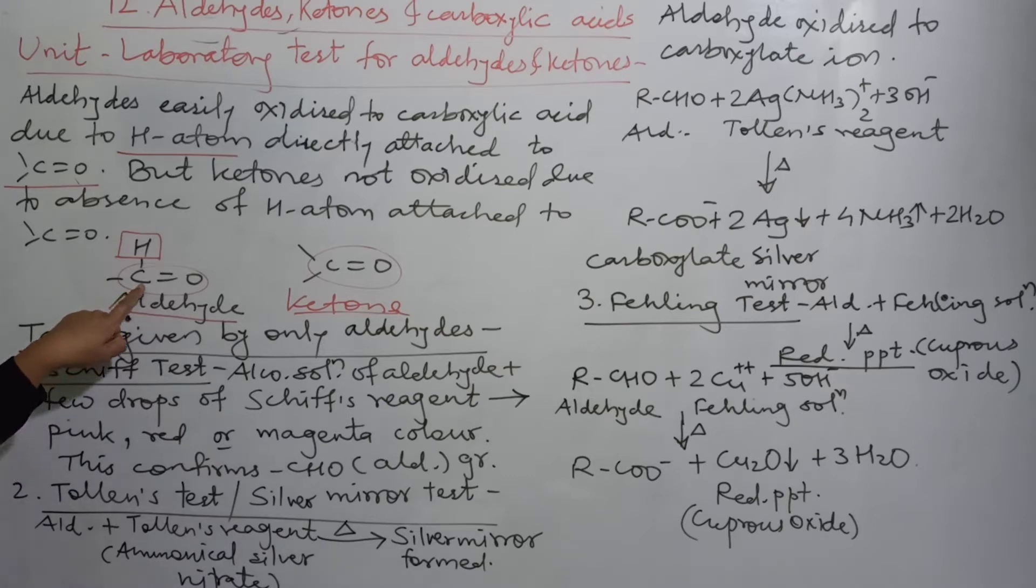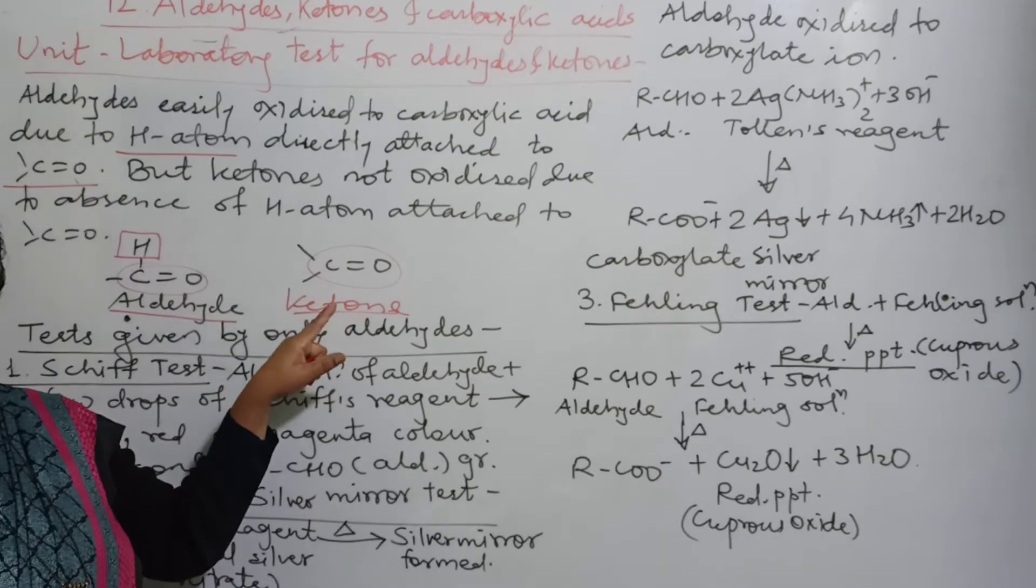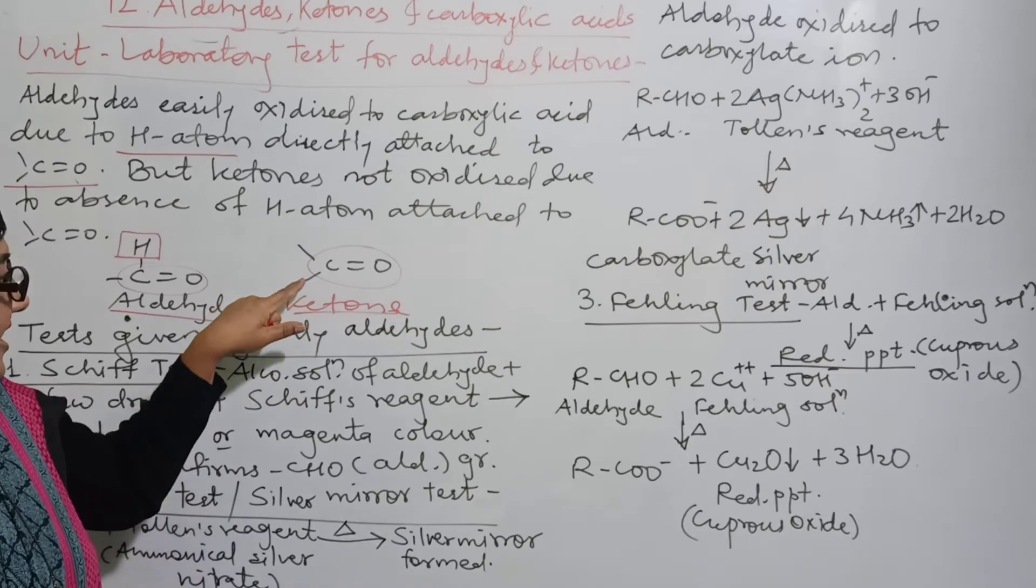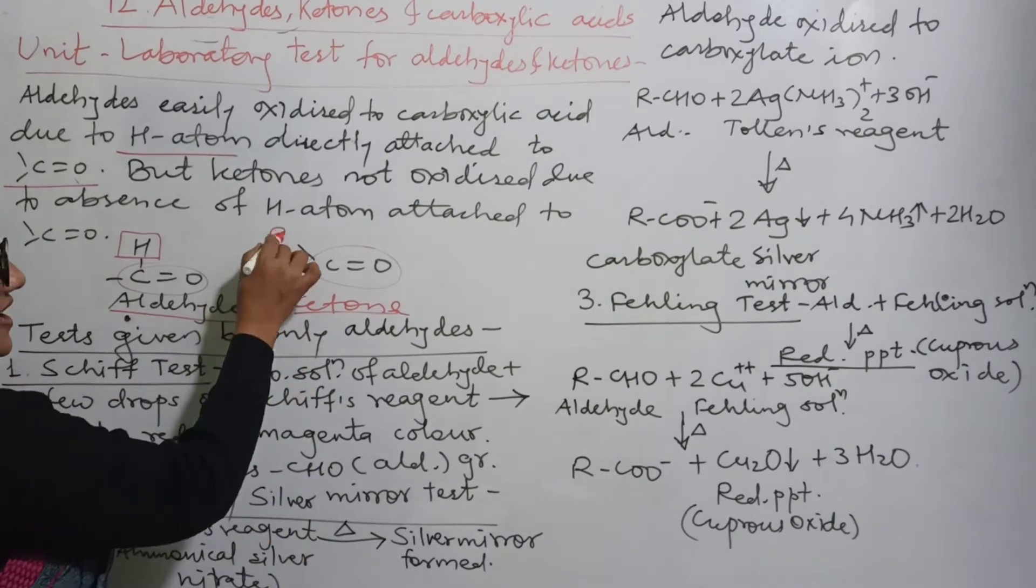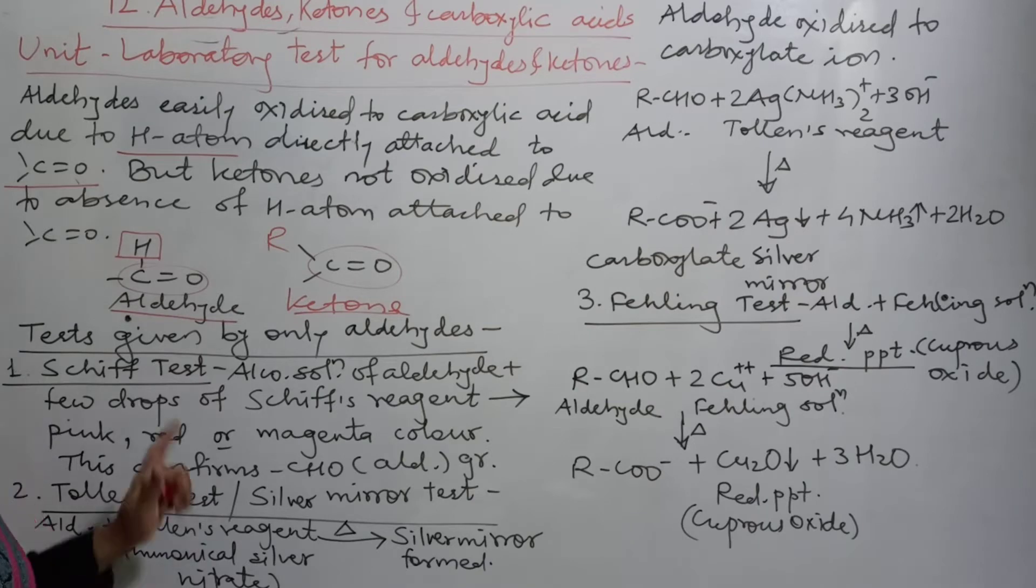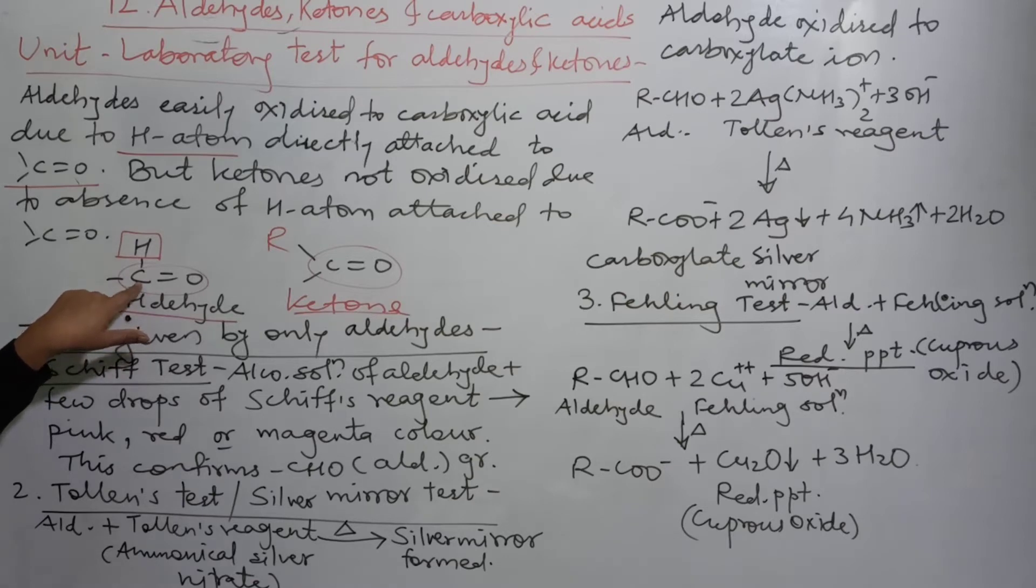This carbonyl carbon atom has a hydrogen atom. This ketone has hydrogen atoms, but they are not attached to the carbonyl carbon. Here R group is attached and that R group has hydrogen atoms, but that is not necessary for this test. For this test, the hydrogen atom attached to the carbonyl carbon is the important condition for giving this test.